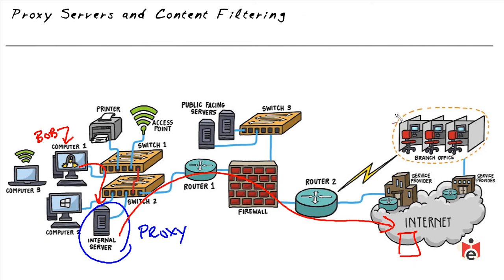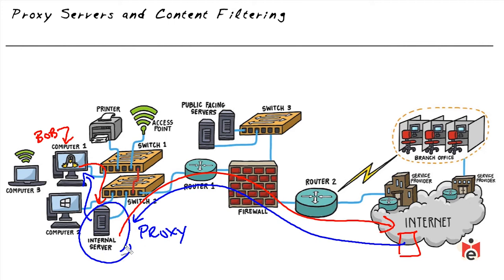The server responds to the proxy, which then forwards the response back to the client — all transparent to Bob. Adding a proxy does introduce overhead, but the benefit is control: we can subscribe to a service that categorizes websites and block entire categories we never want users to visit — for example, hate websites. The proxy server enforces these policies, and the database of categorized websites can be updated daily. This is an example of both a forward proxy and content filtering.